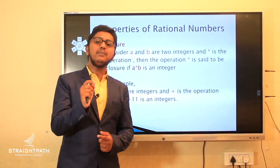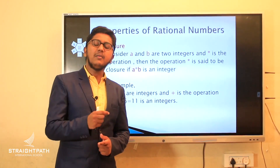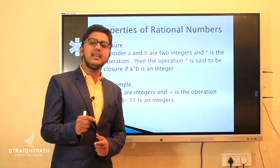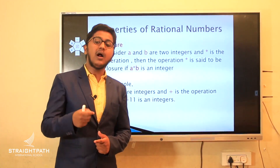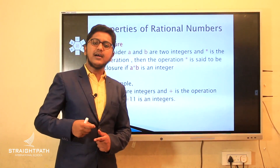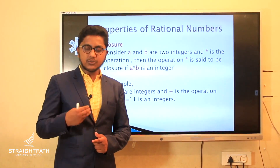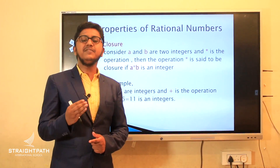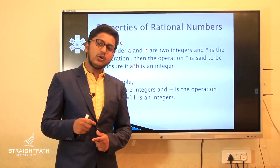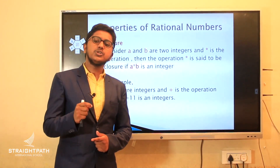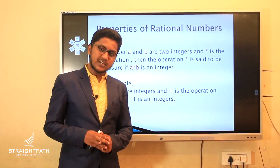But what about division? We can check that a by b divided by c by d will not always be a rational number. If you take 0 as a rational number, division by 0 is not defined. So closure property is not satisfied under division.